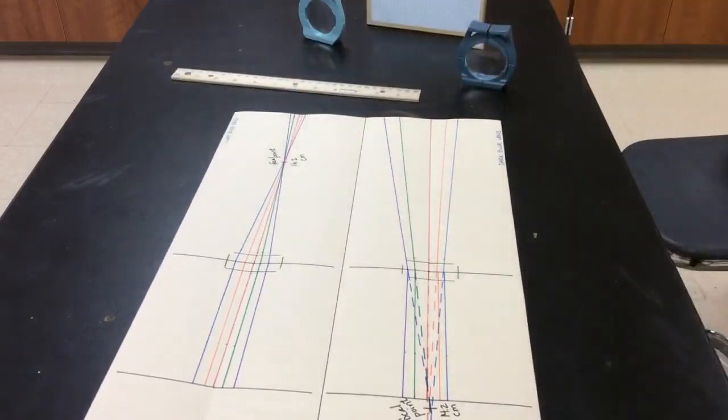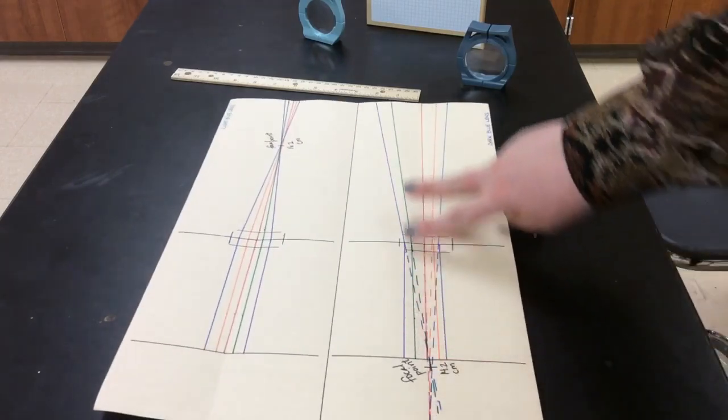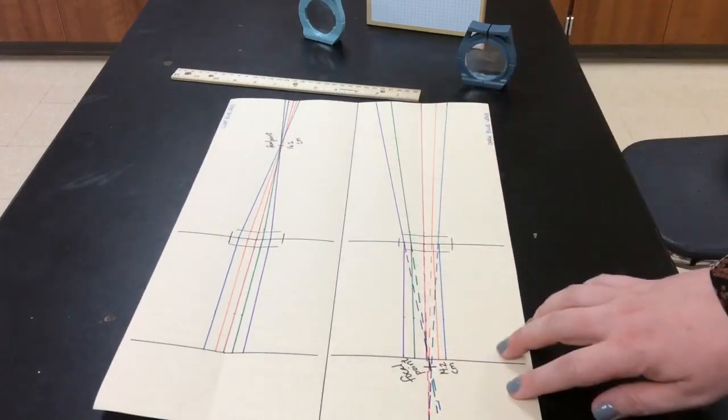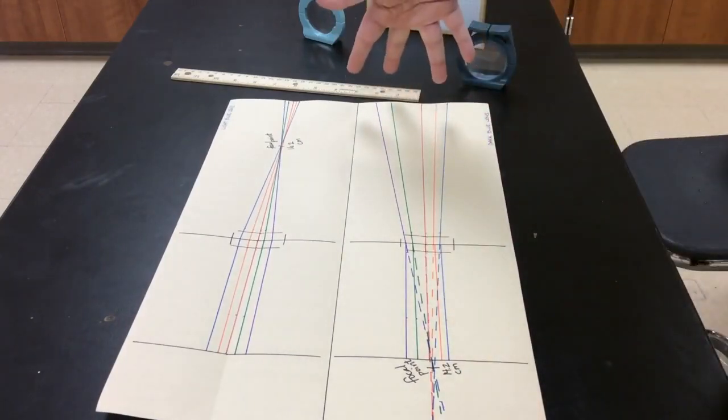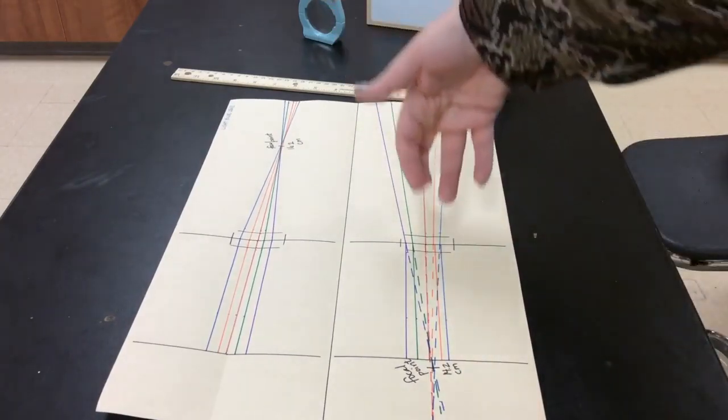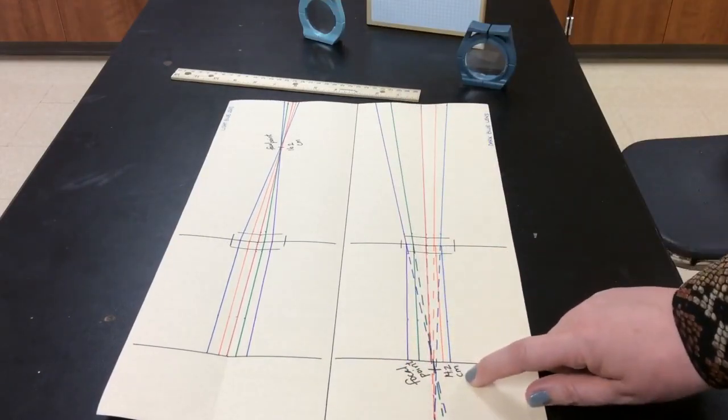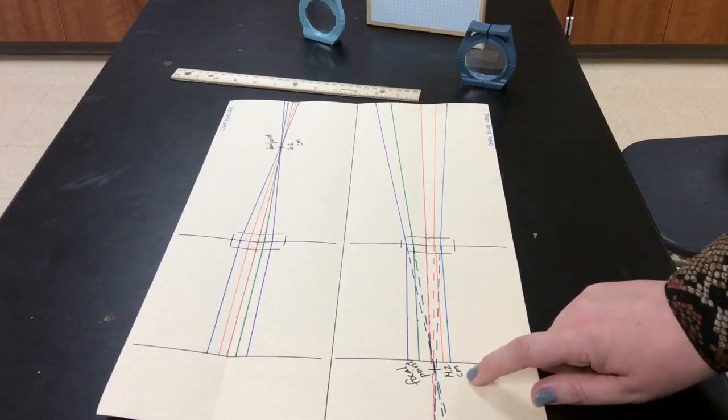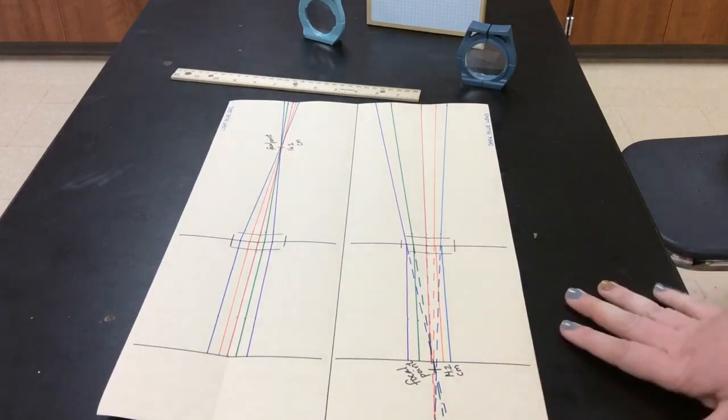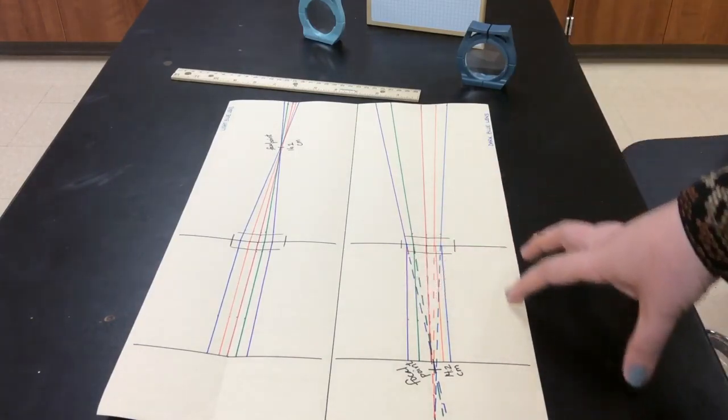So again in your journal what you're going to sketch out in the section labeled dark blue lens is this diagram that I have right here with my lines diverging on the other side of the lens and then converging on this side. Mark your focal point with the distance labeled 14.2 centimeters.